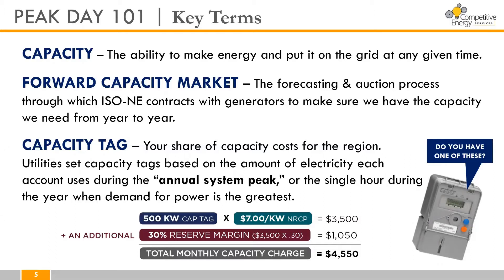So why does this matter? Well, for electricity users with telemeters, the annual system peak day presents an opportunity for customers to curtail their usage during the peak demand hour, lower their capacity tag, and decrease total electricity costs for the future capacity year.